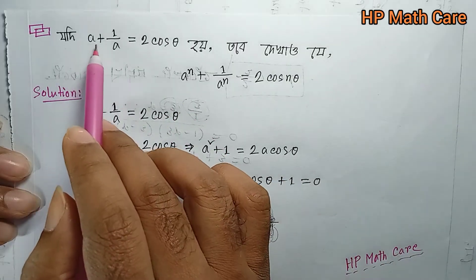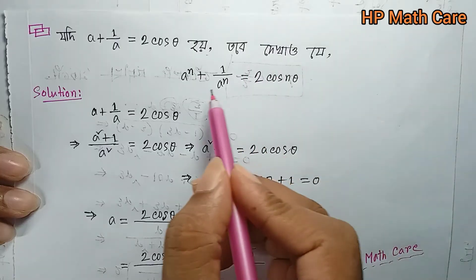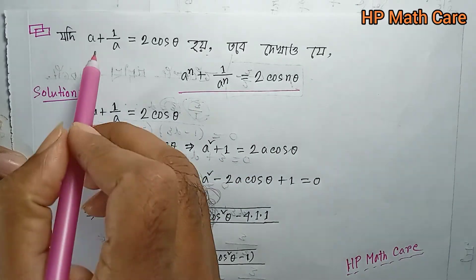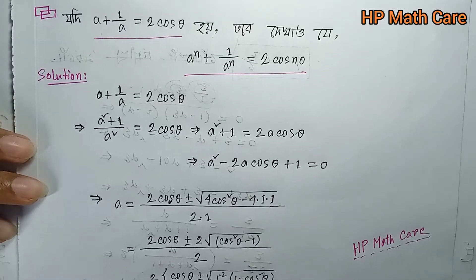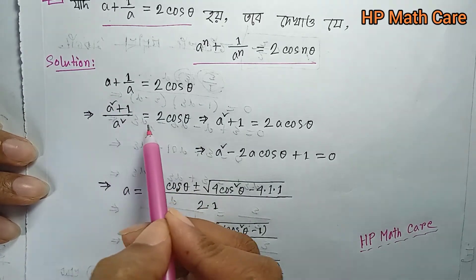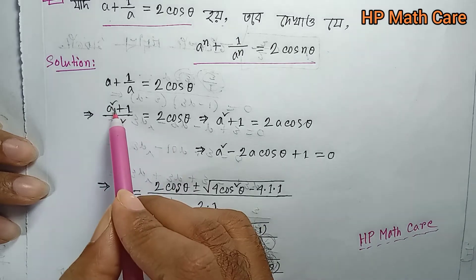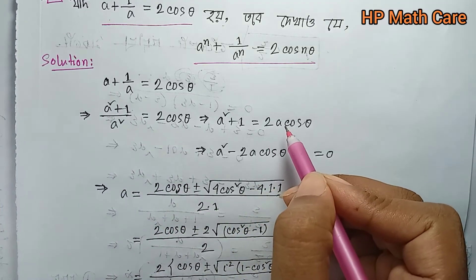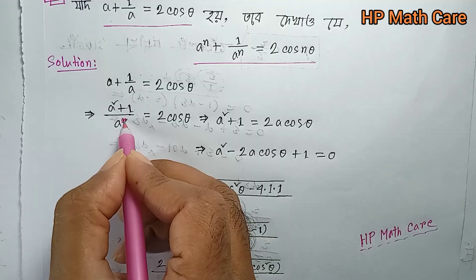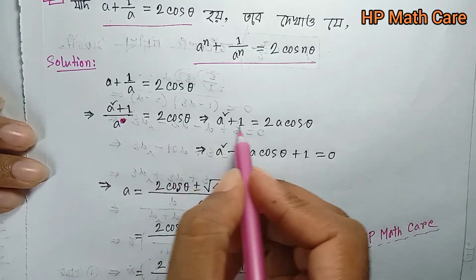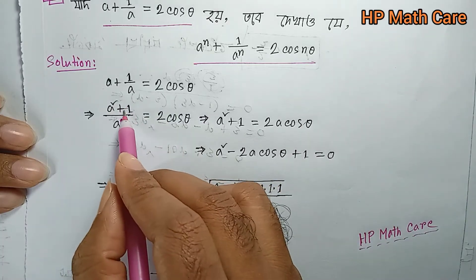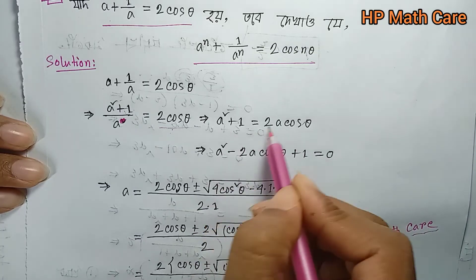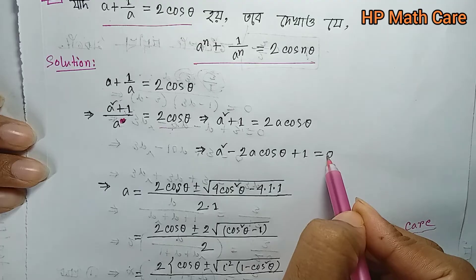Okay, let's see: when a + 1/a equals 2 cos θ, then a^n + 1/a^n equals 2 cos(nθ). Now let's see: a + 1/a = 2 cos θ means a squared plus 1 equals 2a cos θ. So rearranging: a squared minus 2a cos θ plus 1 equals zero.